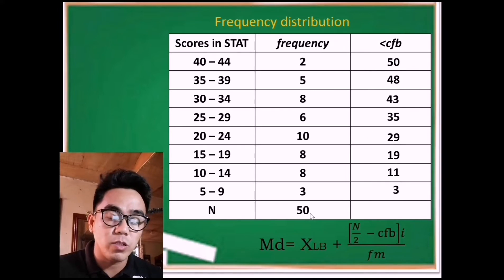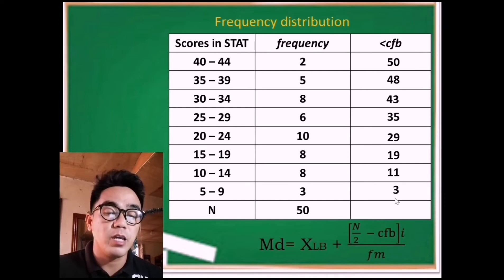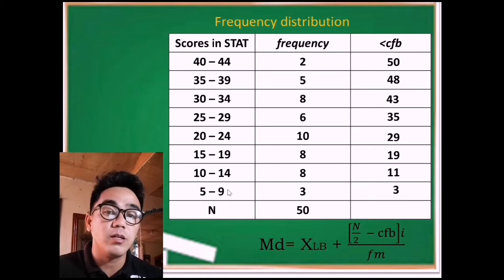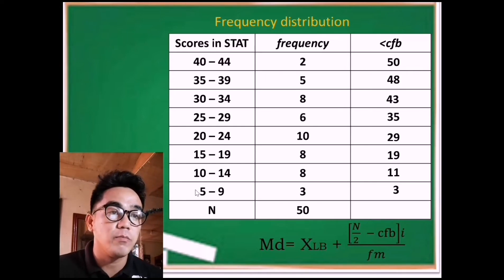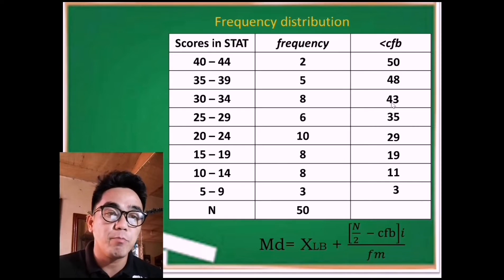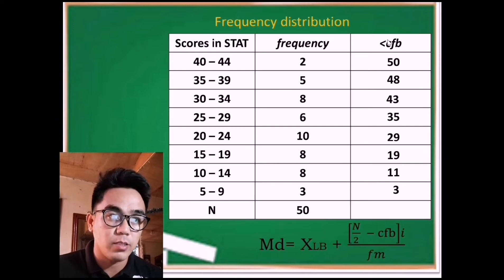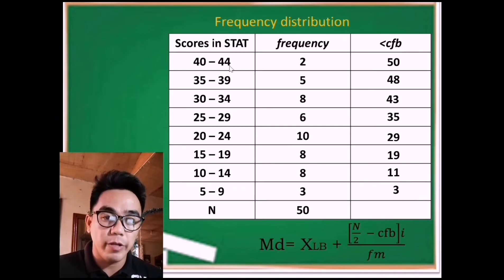To check that you filled in all values correctly, verify the last value: 50 must equal the total number of population, and 3 should be the same as the first frequency on the lowest class limit in the frequency distribution. This is how you properly fill in the less-than cumulative frequency before the median class for data arranged in descending order.